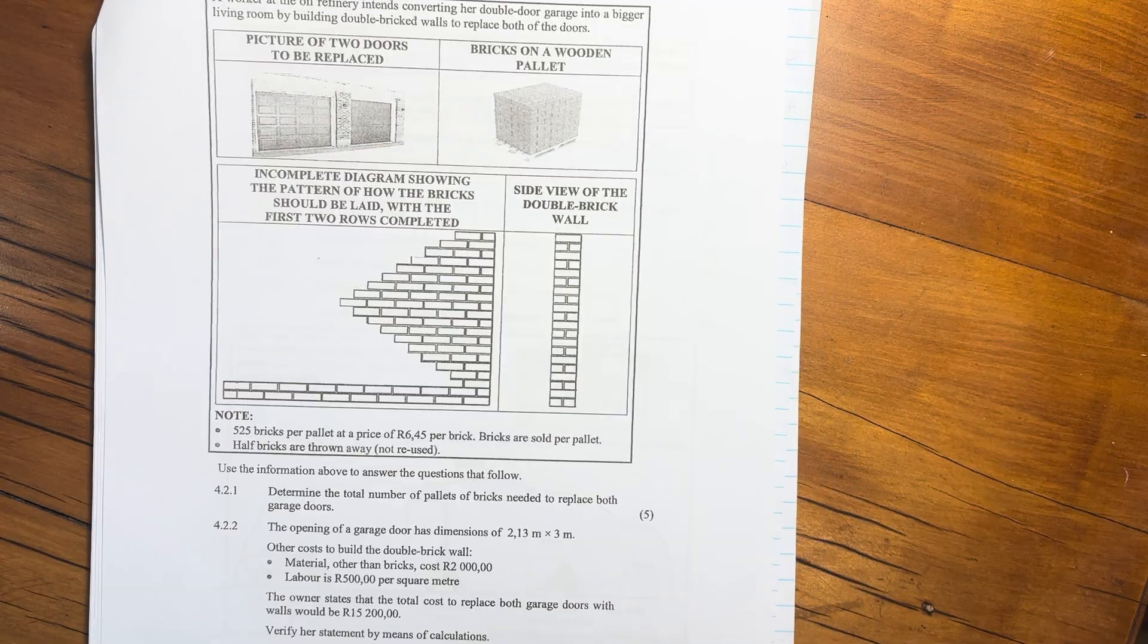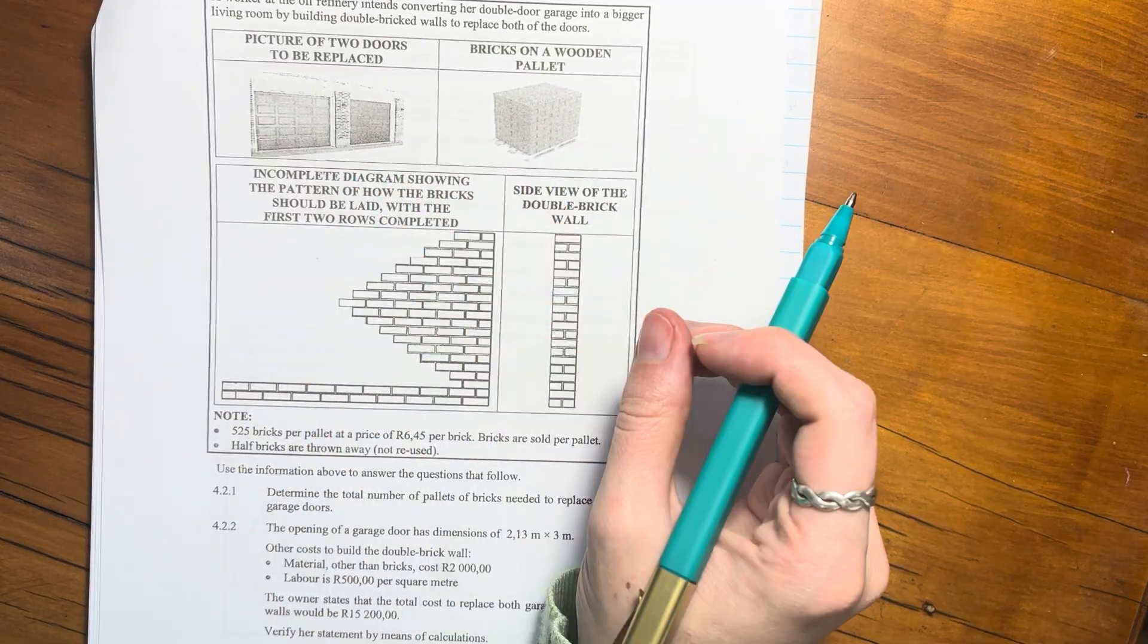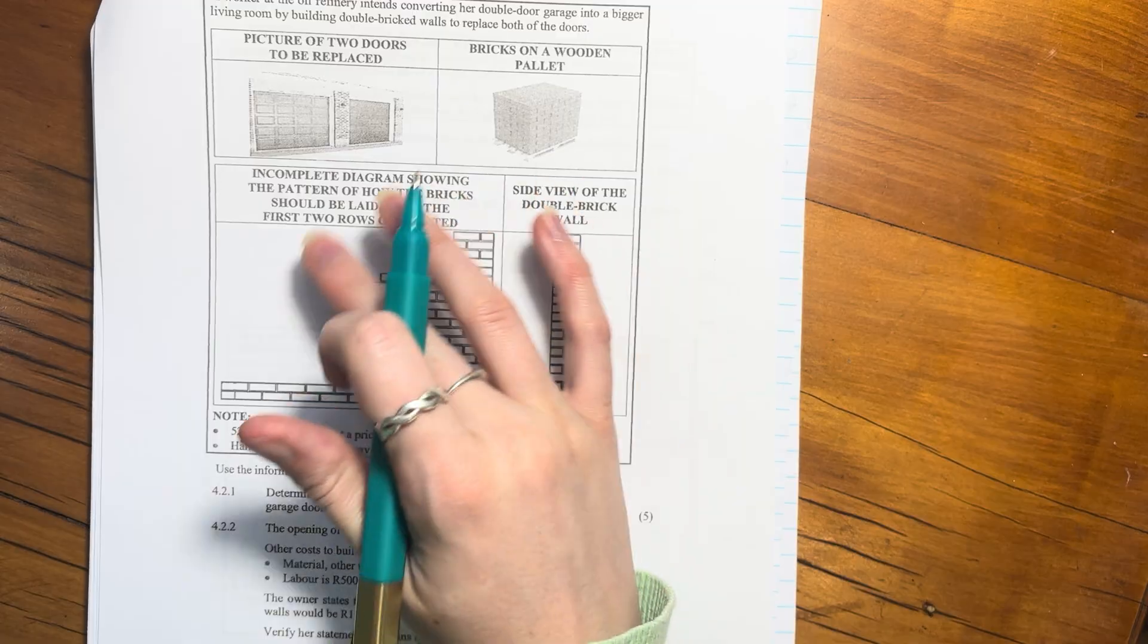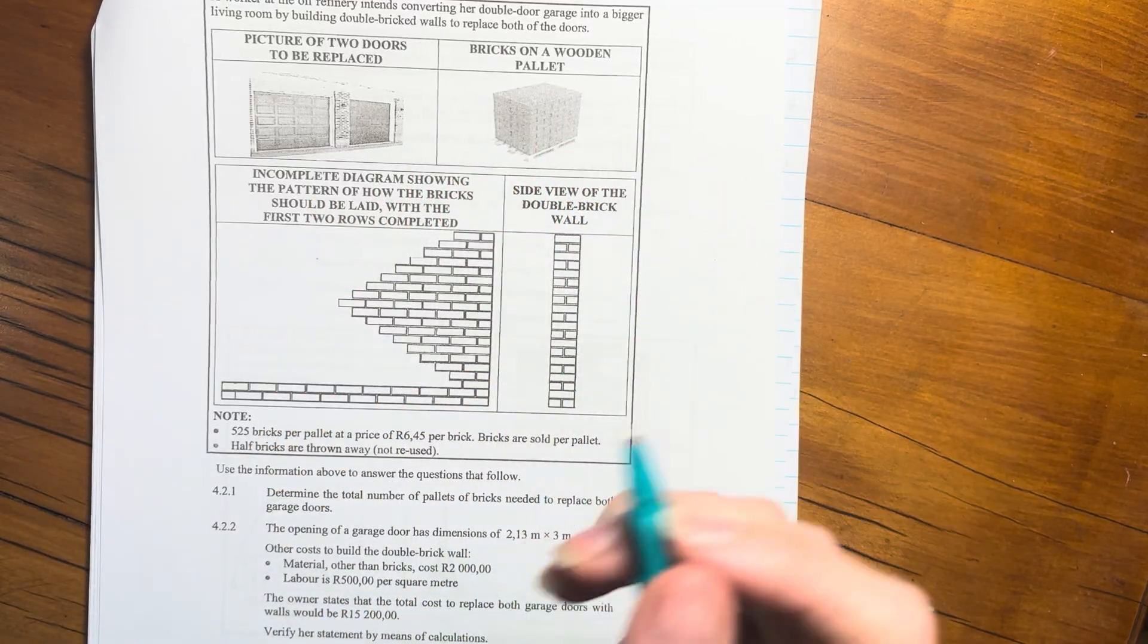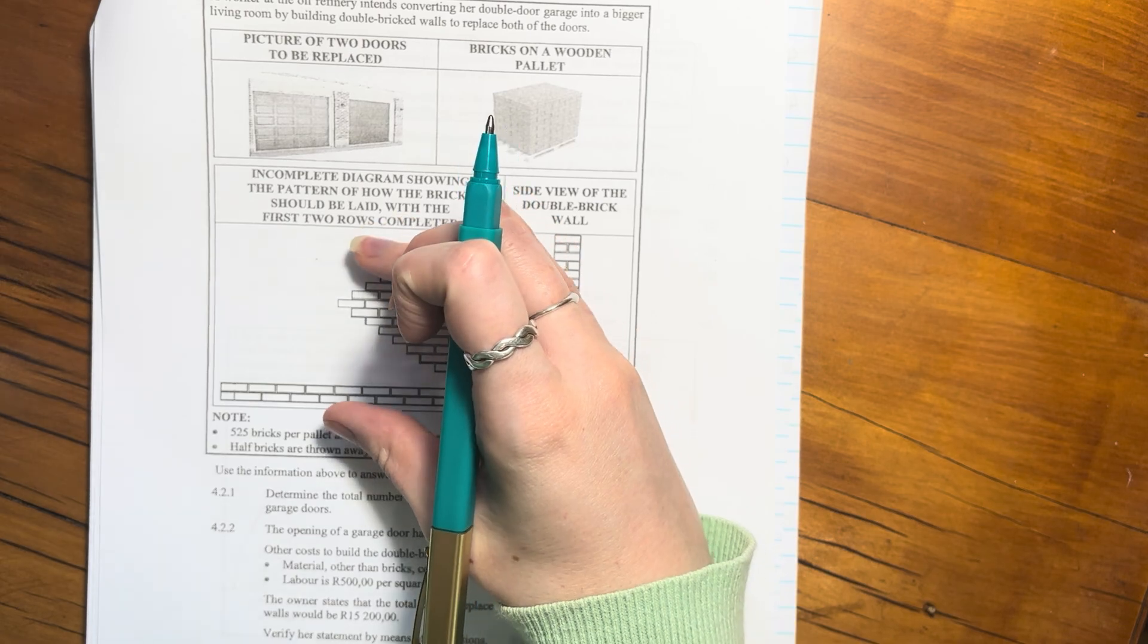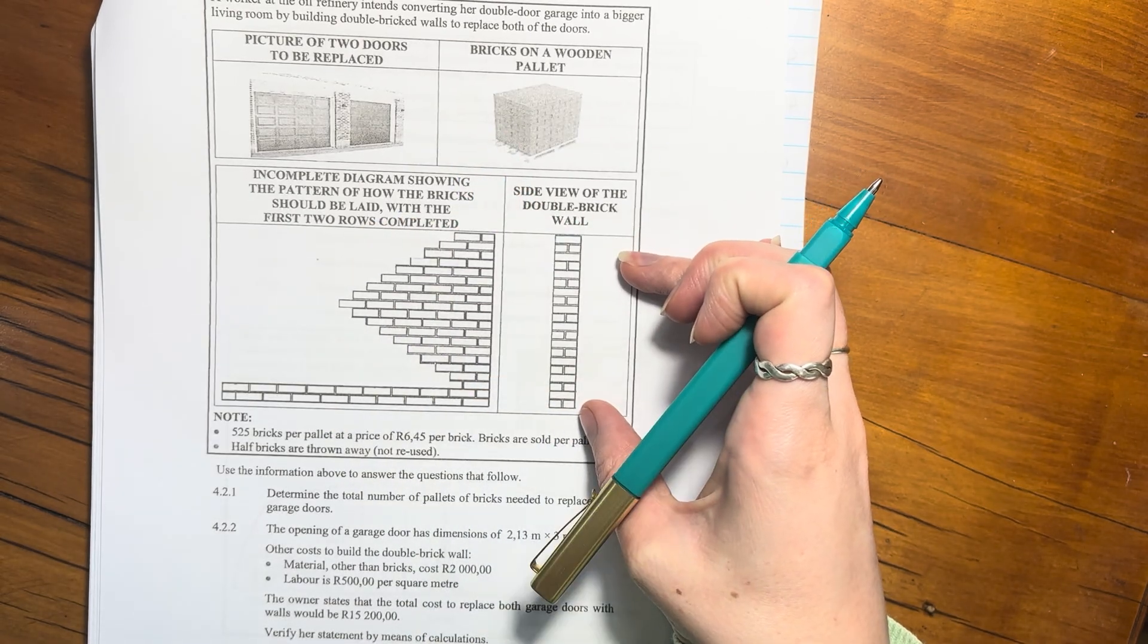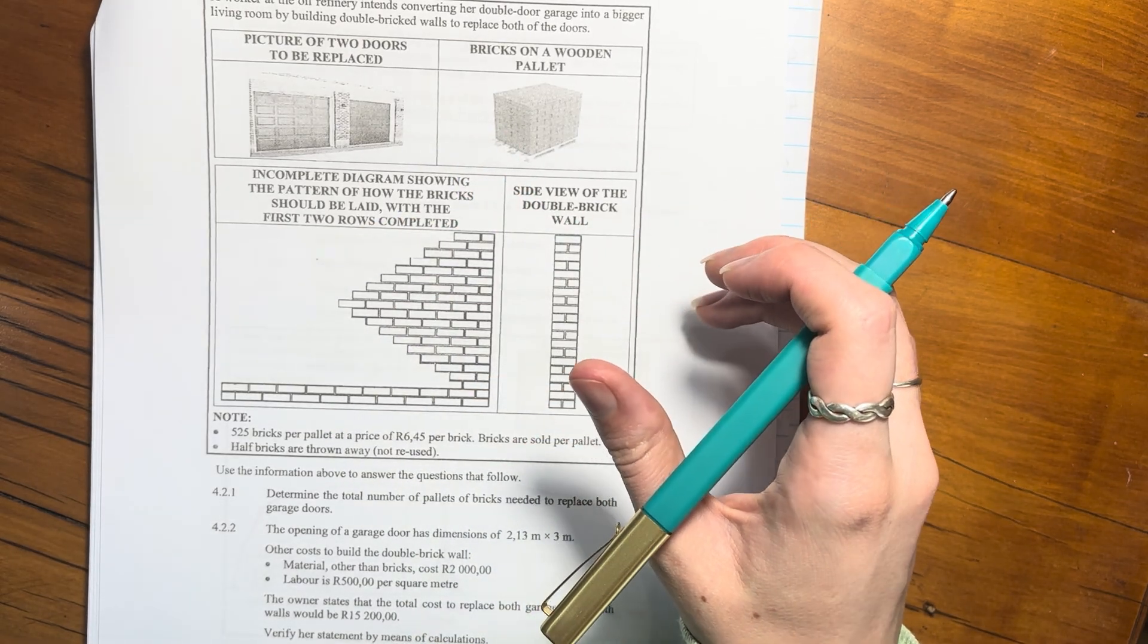Here's how the bricks are delivered, and then this is a side view and an incomplete diagram showing the pattern of how the bricks will be. It's quite important that we look at this because we're going to need this for our calculation, so don't just discount it as pictures.